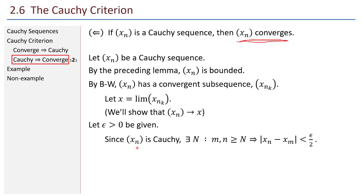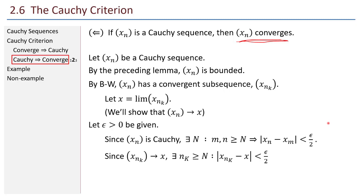Since my sequence is Cauchy, there is an index N so that for indices m and n greater than N, the difference between x sub n and x sub m is less than epsilon over 2. Also, since my subsequence converges to x, I can find a subscript k large enough in that subsequence so that the difference between x sub n sub k and x is also less than epsilon over 2.